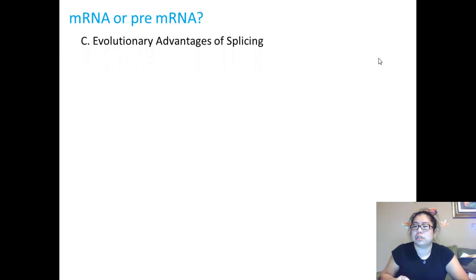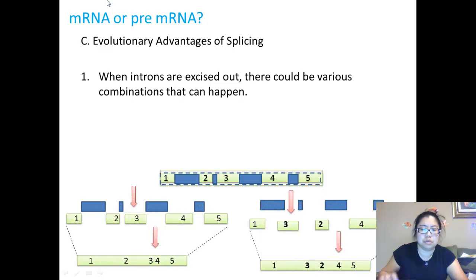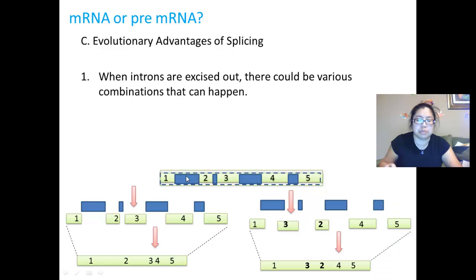So what are the evolutionary advantages of having splicing? Yes, it's an extra step, but there are great advantages and insurance which eukaryotes have over prokaryotes. When introns are excised out, there can be various combinations that you can end up with for your final protein. In pre-mRNA, you have introns that are in blue, and they're excised out. Here are two scenarios that can happen in terms of combinations.